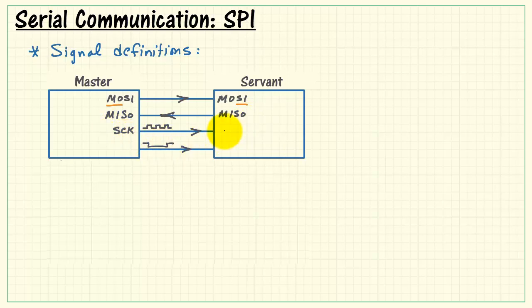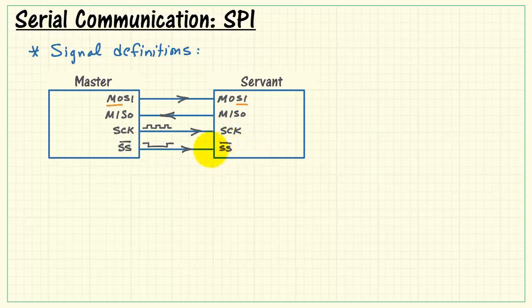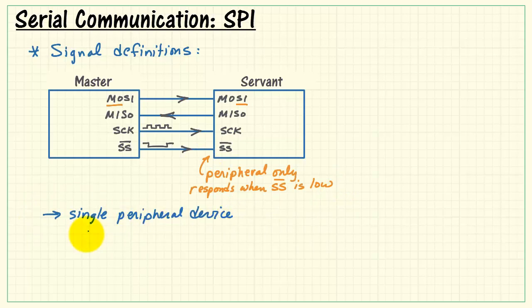Serial clock, SCK. And then finally we have servant select. Again, this is an active low style signal. And the servant only responds to the remaining three lines coming in when that servant select line is low.